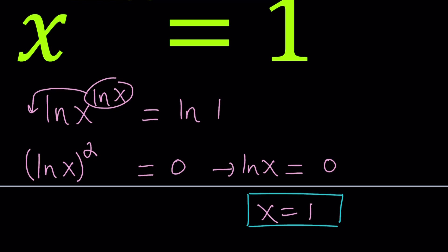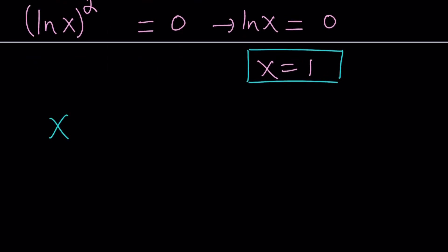But we're not looking for real solutions only — we're also going to be looking for complex solutions. So we need to do a little bit more than this to solve for all solutions. Let's restart. In order to get the complex solutions, we're going to write 1 as a complex number in polar form. In other words, we're going to complexify 1.